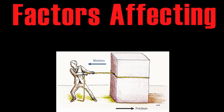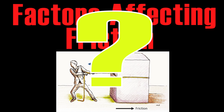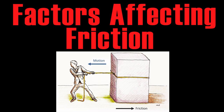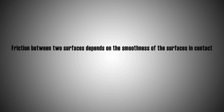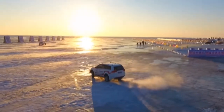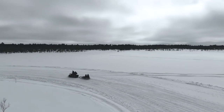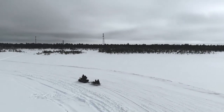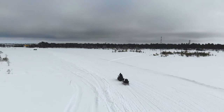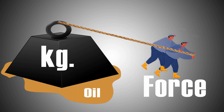The main topic is Factors Affecting Friction. Do you have any idea about factors that affect friction? Friction between two surfaces depends on the smoothness of the surfaces in contact. For instance, it is easier to drive a vehicle on a road than on a frozen lake, due to the difference in surface smoothness. To drive on a frozen lake, you need different tires, which increases surface roughness. A greater force is required to move surfaces past each other when they are rough compared to when they are smooth.